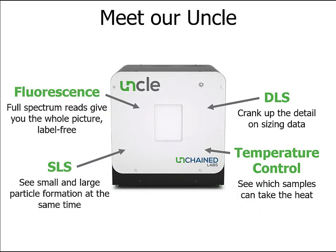That leads us to the UNCLE and its ability to gather conformational and colloidal information to paint a fuller picture of protein stability. UNCLE is an all-in-one, multimodal biologic stability platform that combines three detection methods in 12 applications to help you understand the stability and aggregation behavior of your proteins. Only 9 microliters of sample is needed, and up to 48 samples can be run at once. Those three detection methods are full-spectrum fluorescence, static light scattering (SLS), and dynamic light scattering (DLS).